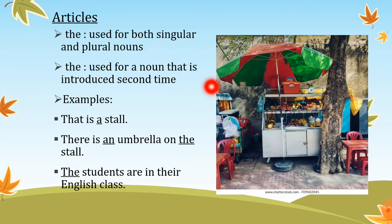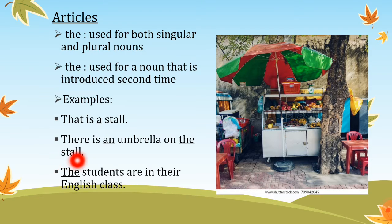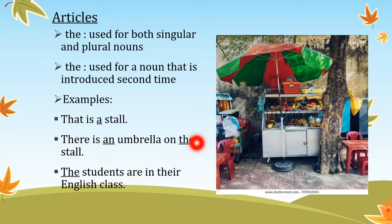The first example is: 'This is a stall.' Here 'a' is used with the noun starting with a consonant. The second sentence is: 'There is an umbrella on the stall.' 'An' is used with the noun 'umbrella' that is starting with a vowel. Here we also have the article 'the' used.